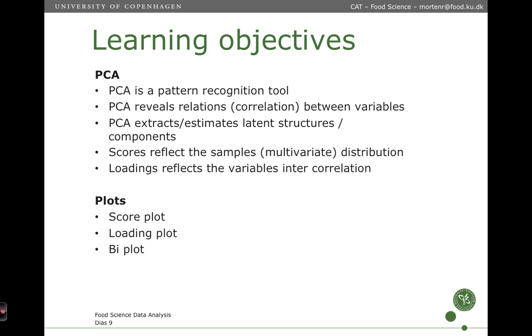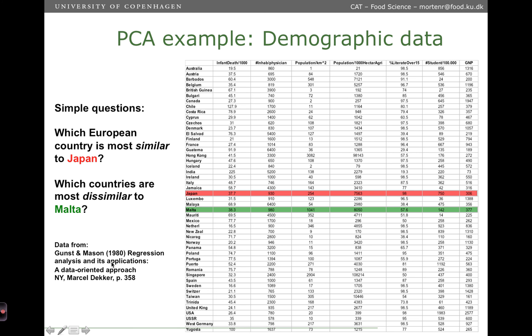The learning objectives is that you should know that PCA is a pattern recognition tool. That PCA reveals relations, that is correlations between variables. That PCA extracts, estimates what we call latent structures or components. That we have something called scores and the scores reflects the samples distribution or in this case the multivariate distribution of the samples. And the loadings reflect the variables in the correlation. Then we have, in addition to PCA, we have three types of plots which we use to visualize the results and that is where the tool becomes really powerful. So we have three types of plots. We have the score plot, the loading plot and the biplot.